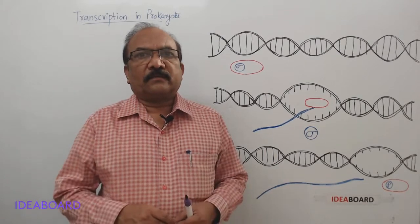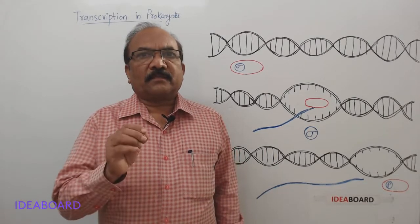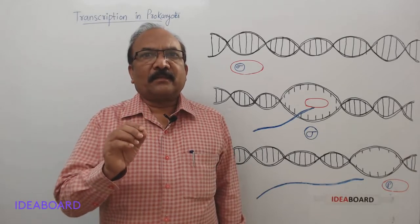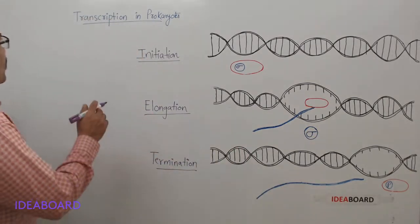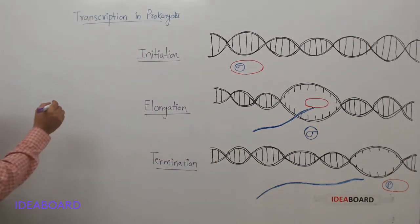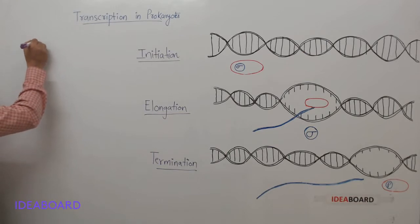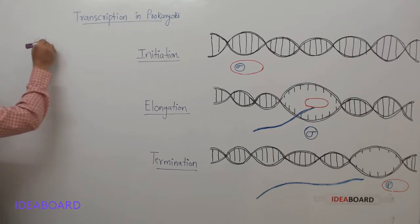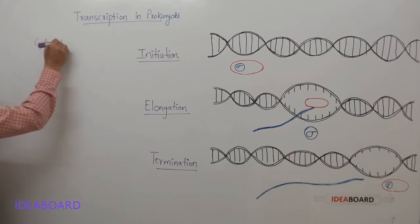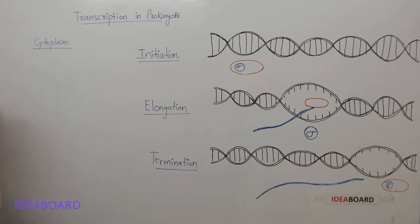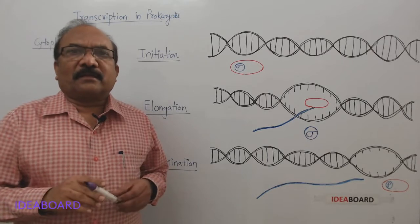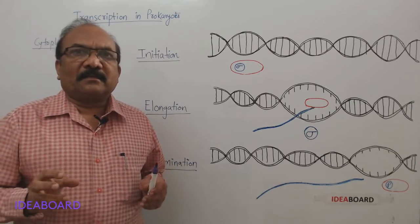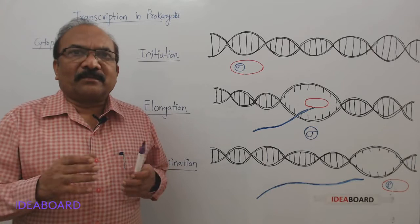Hello students, today we will discuss the topic transcription in prokaryotes. In prokaryotes, transcription occurs in the cytoplasm. But whereas in eukaryotes, transcription occurs in the nucleus. What might be the reason?